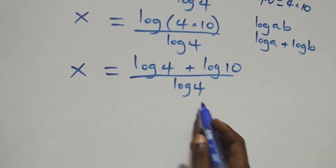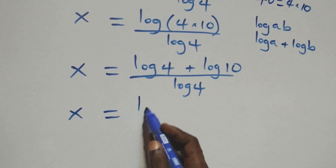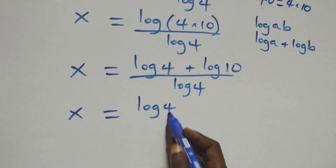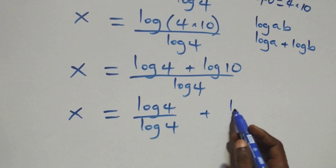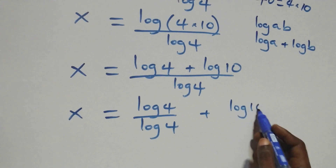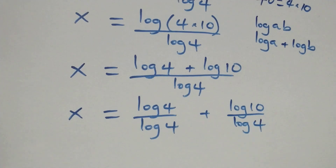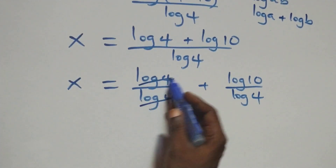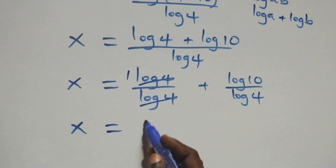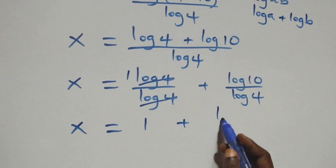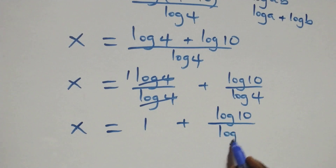Here we have log four in the numerator and log four in the denominator — these cancel each other and one is left. This implies x equals to one plus log ten over log four.